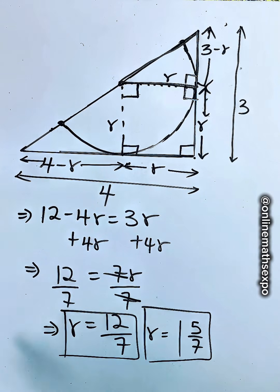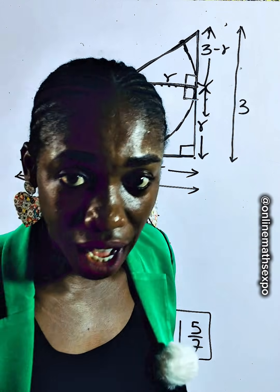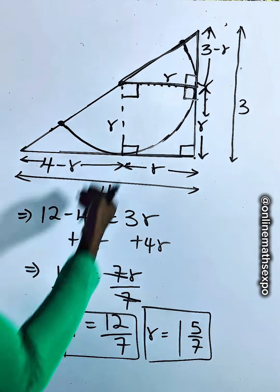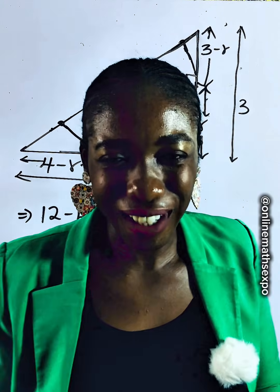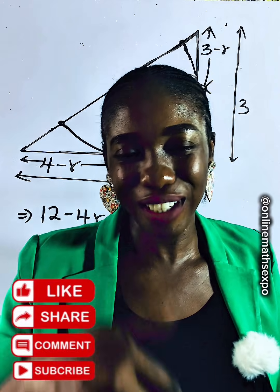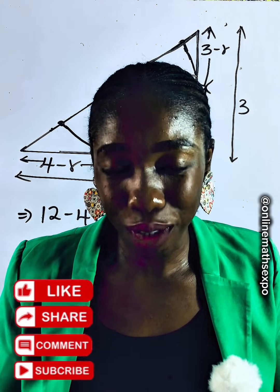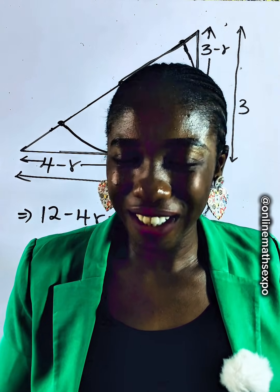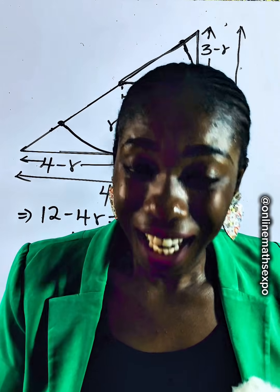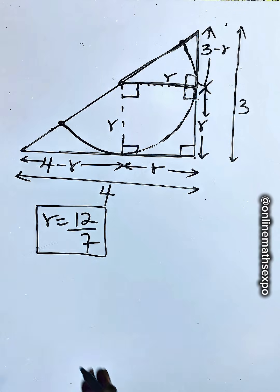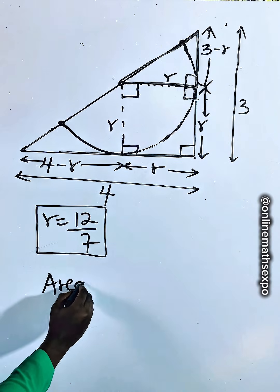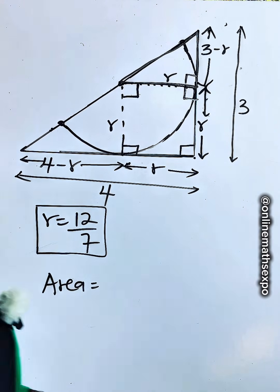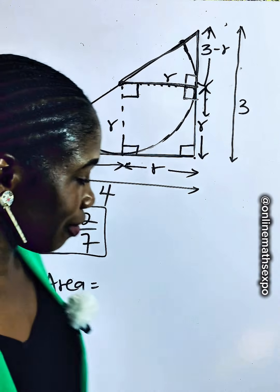Now that we have found the value of R, let's find the area of the semicircle. The area of a semicircle is just the area of the full circle divided by 2. The area of a circle is pi R squared, so we divide that by 2. If you are returning to us, thank you for choosing to learn through us — don't forget to give us a thumbs up and share this with others.